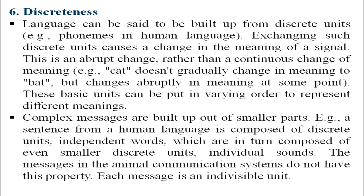The next feature is discreteness. Language is built from discrete units — phonemes — and exchanging them causes an abrupt change in meaning rather than a continuous change. For example, if you take the English word 'cat' and replace the first sound ka with ba, you get 'bat' — the meaning change is abrupt. Discreteness means human language can be segmented into smaller categories.